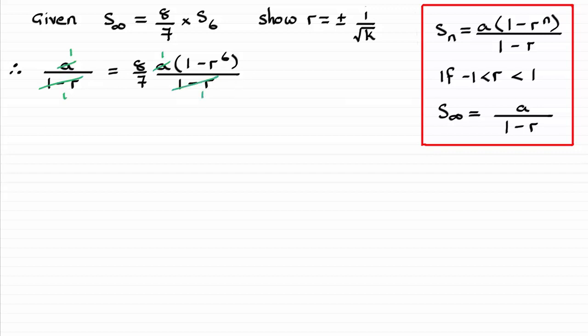So all I need to do now is get rid of this 7, multiply both sides by 7. That gives me 7 equals, and on the right hand side just expand the bracket with that 8. You're going to get 8 minus 8r to the power of 6. Rearranging, we have 8 take away 7 is 1. And if I divide both sides by 8, I get r to the power of 6 equals 1 eighth.